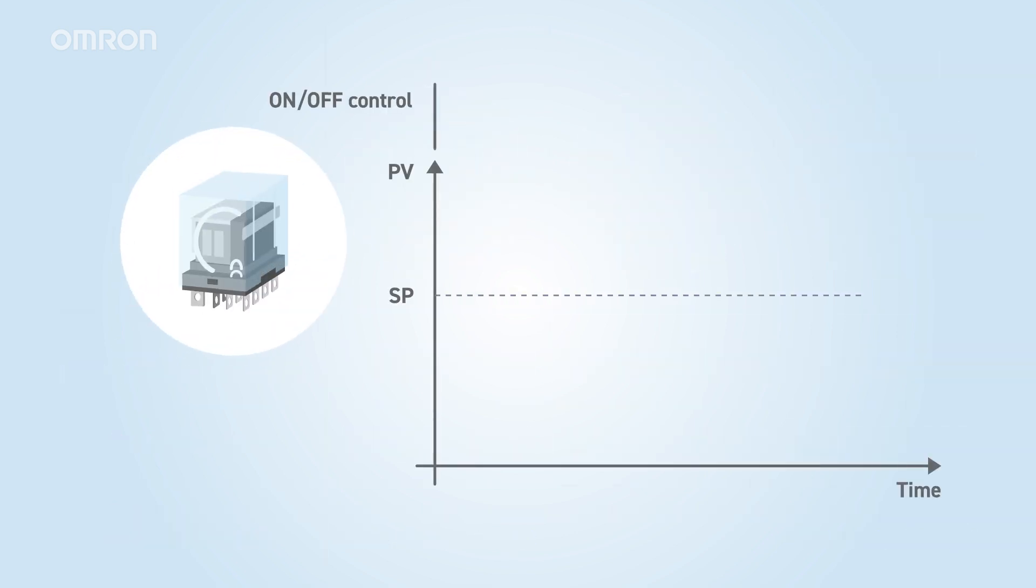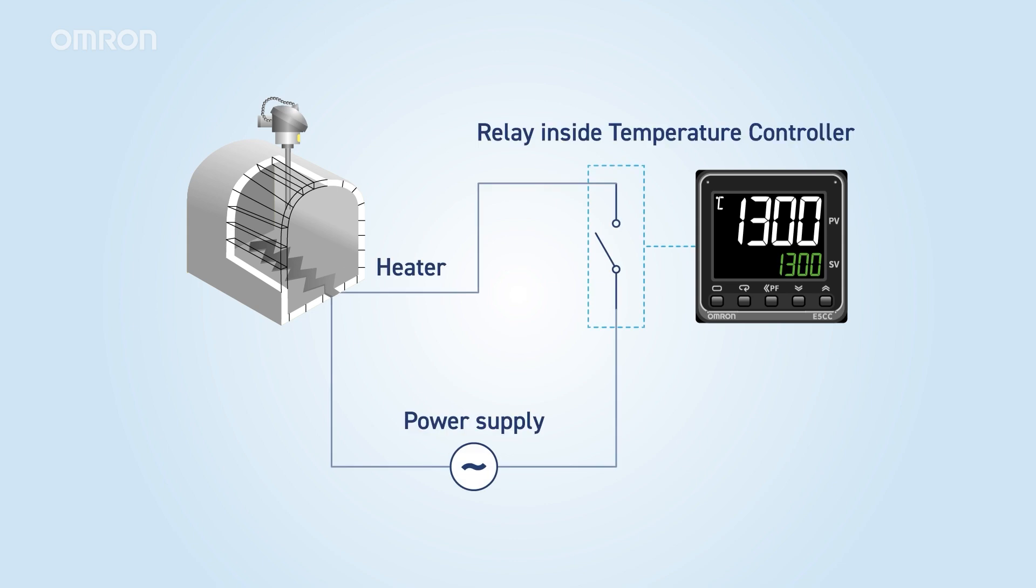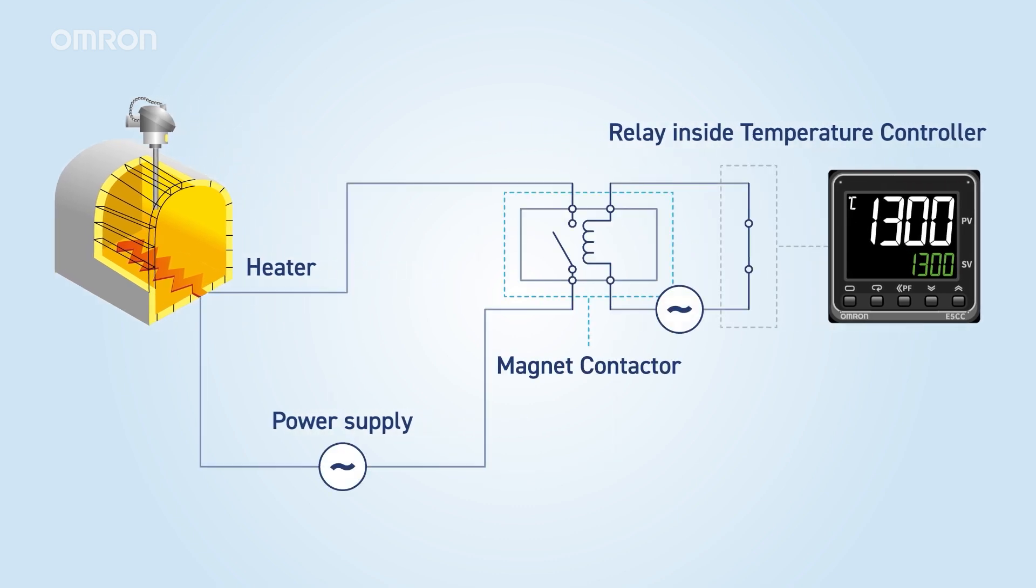Relays open and close contacts using an electromagnet. Due to the limited lifespan of the contacts based on the number of open-closed cycles, they are not suitable for equipment that require frequent and rapid switching. They are commonly used for on and off control. Additionally, relays generate less heat, allowing for smaller output device sizes. Relays are built into temperature controllers with relay output types, enabling direct on-off control of heaters. If the heater current exceeds the relay's allowable current, the heater is turned on and off via the magnetic contactor.